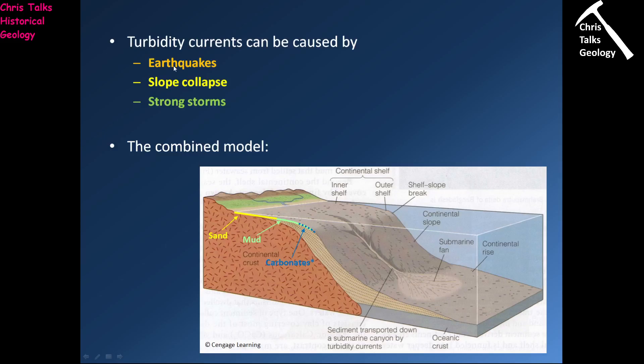The first one is earthquakes. On the continental shelf, you're going to have lots of relatively loosely consolidated material with lots of water mixed in with the sediment. If you start shaking that material even gently, that can be sufficient to cause a slump — essentially a landslide — which will turn into a turbidity current.